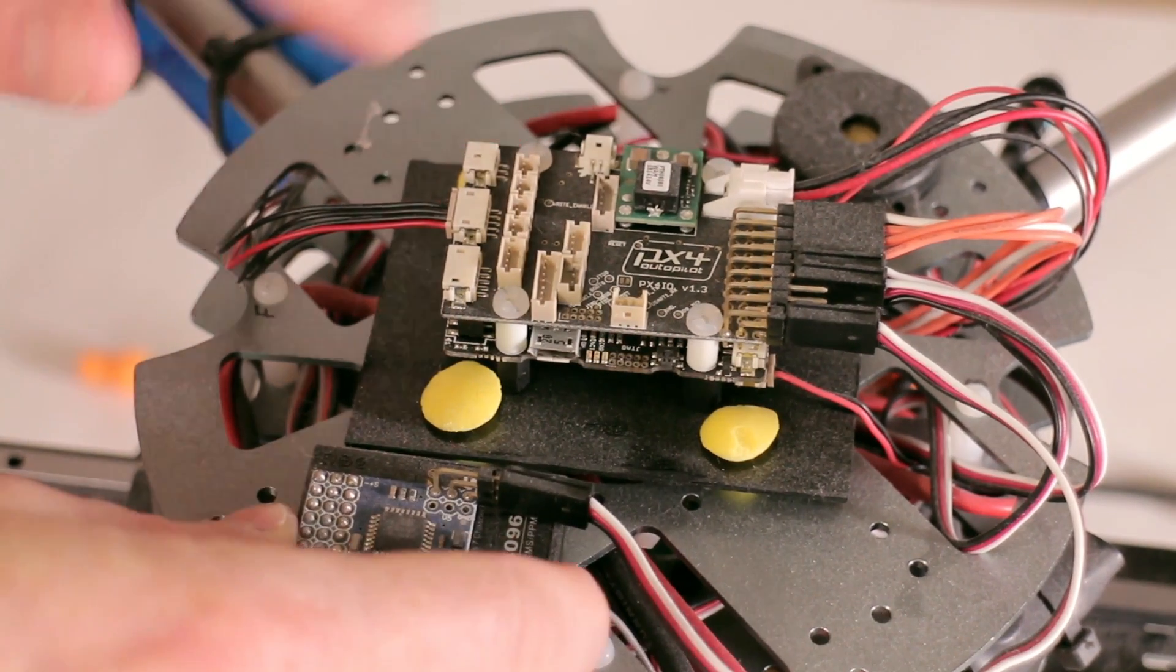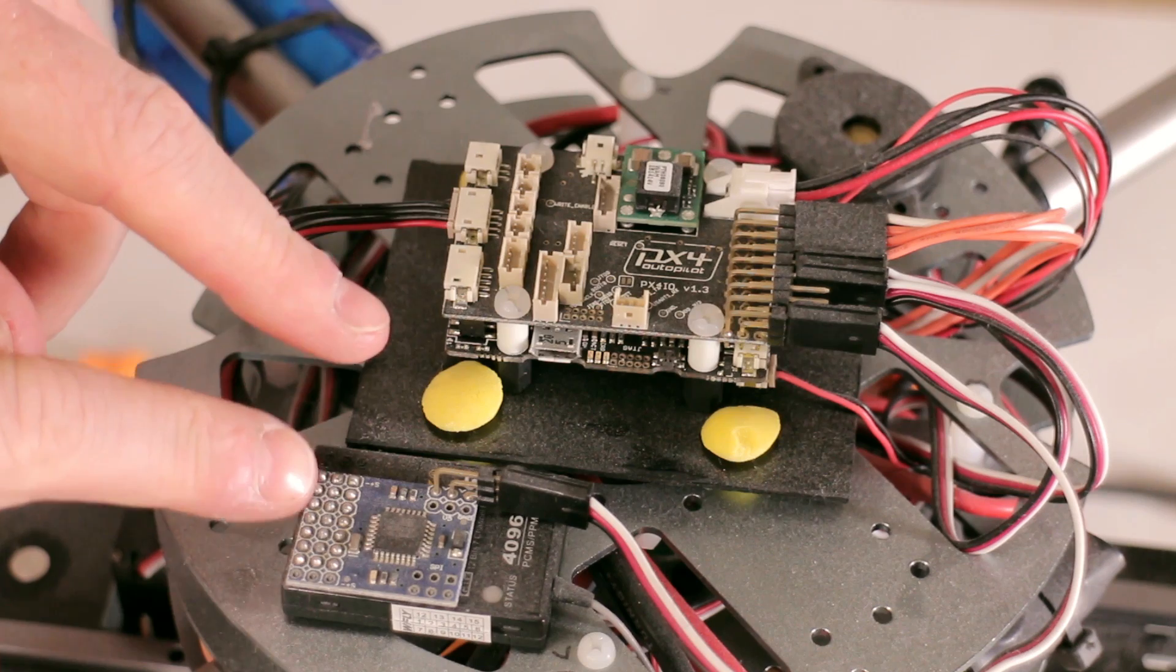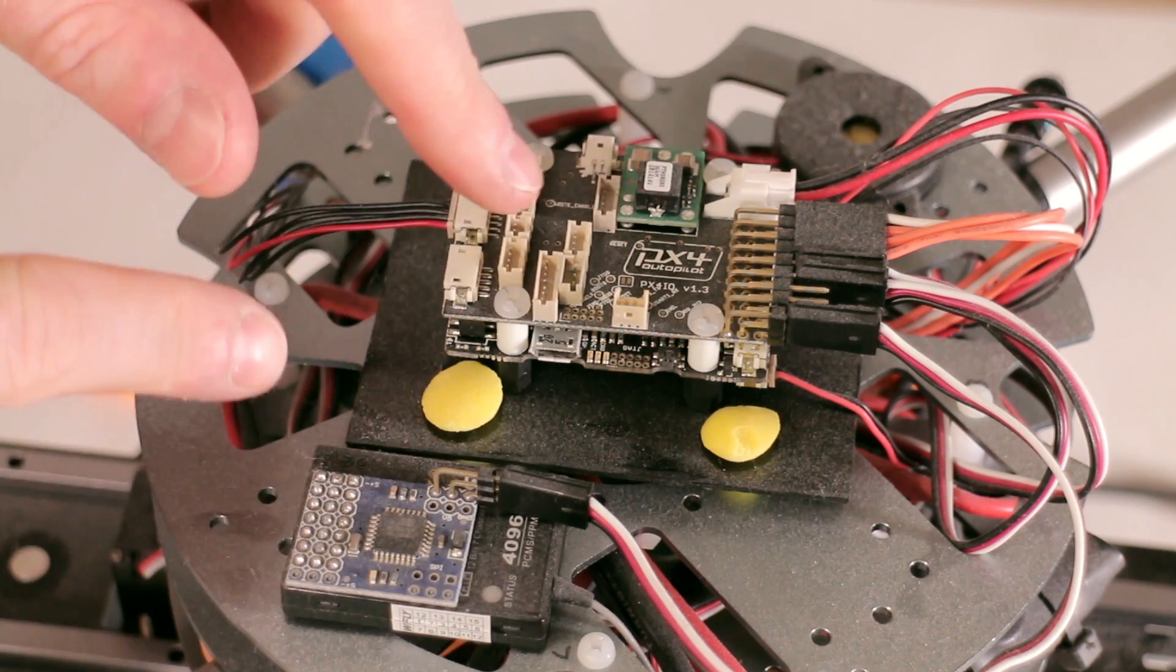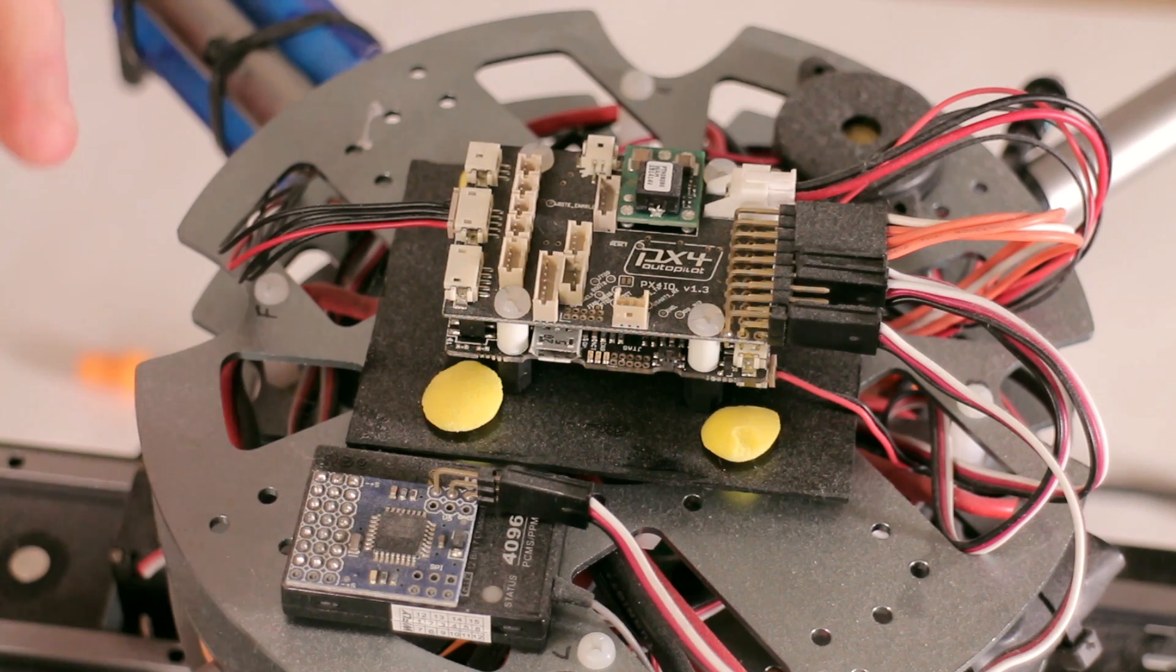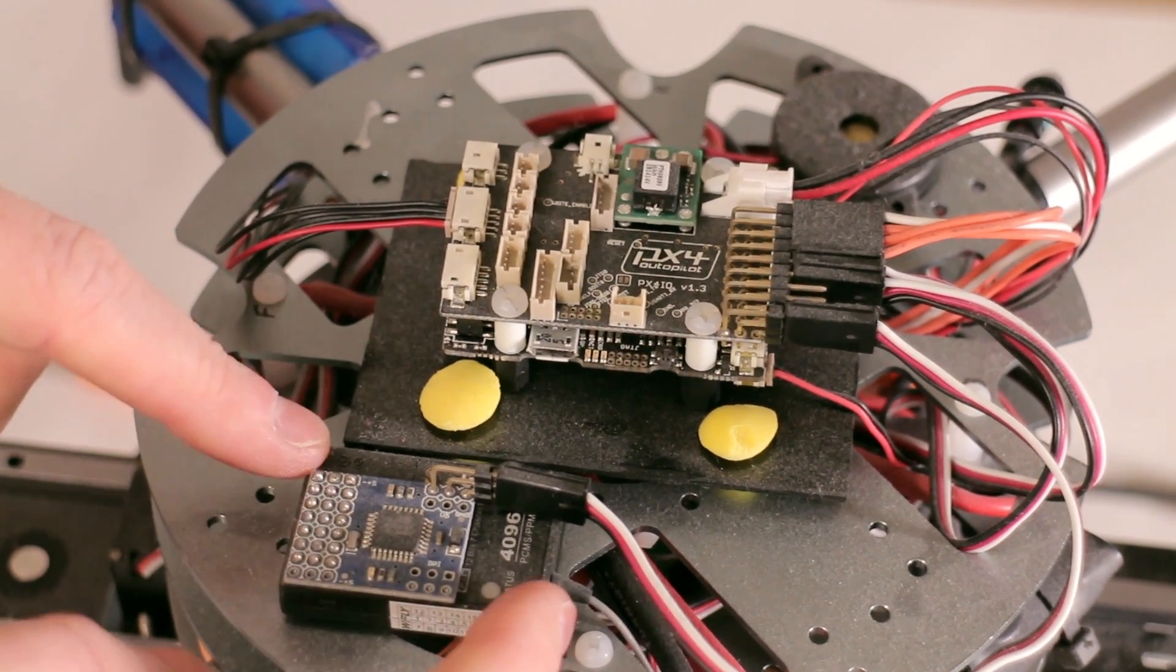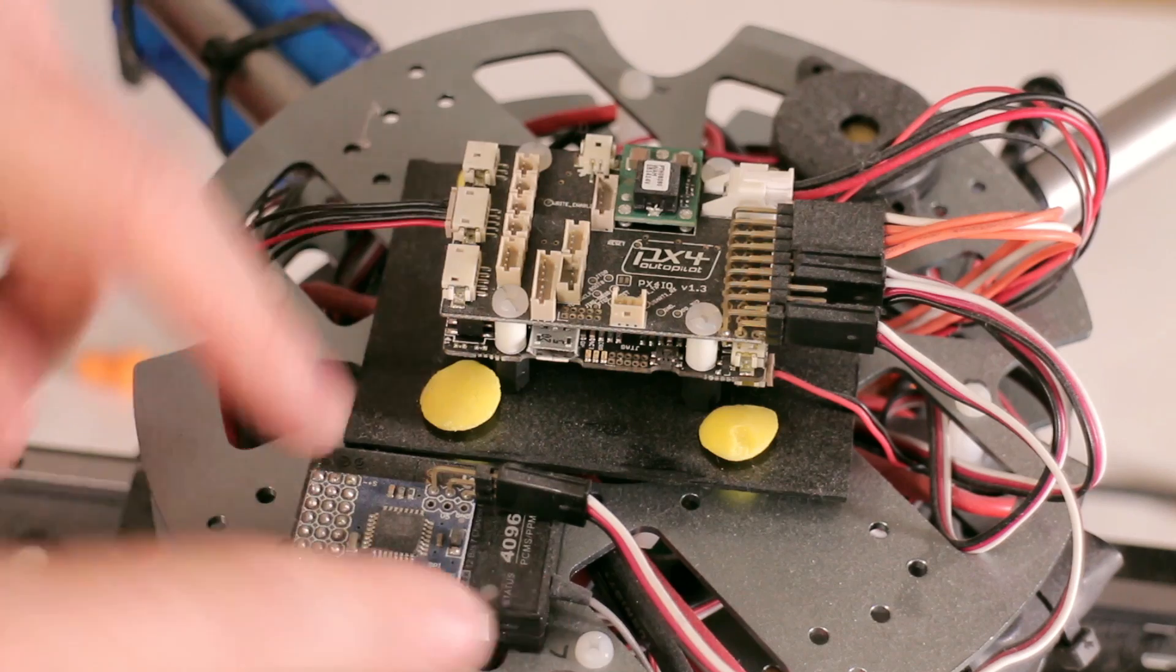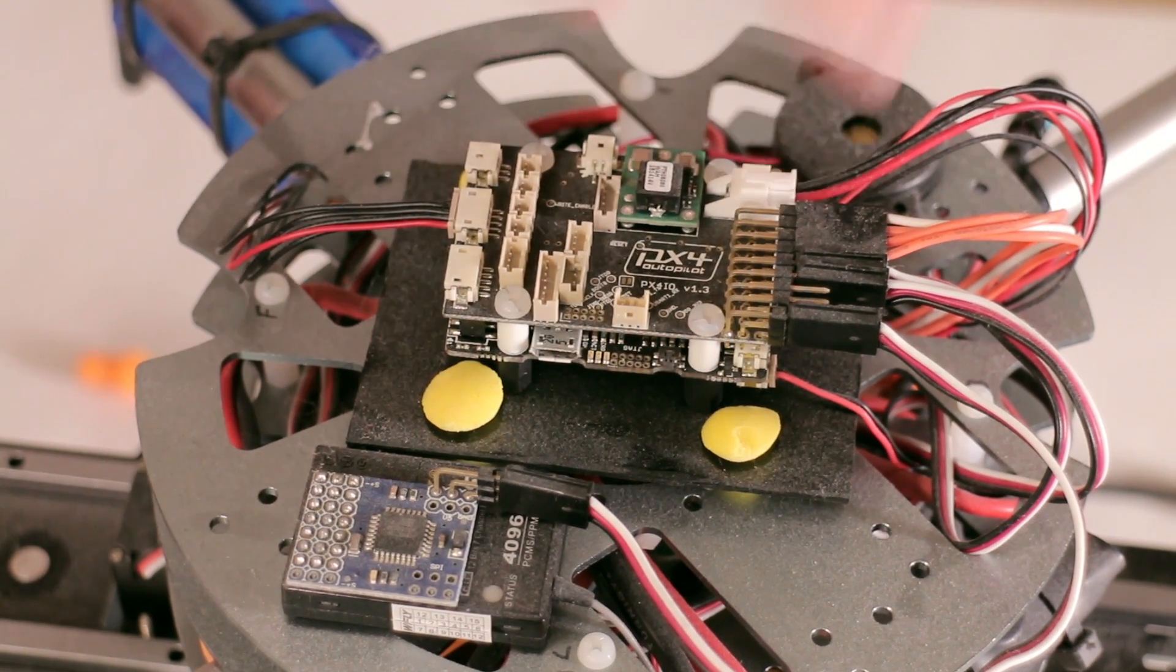One of the differences here is the servo connection. Rather than having all the channels feeding in independently, it uses a PPM servo feed, which is all the signals combined into one. So I've bodged a little adapter board on top of one of the radio receivers here. But it does have regular motor out, switches and buzzer connections.